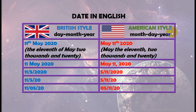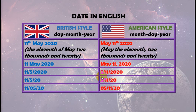Sedangkan untuk penanggalan American style, urutan tanggal yang disebutkan adalah bulan dulu, baru hari, kemudian tahun. Angka yang digunakan bisa menggunakan bilangan urut atau bilangan pokok. Contoh: 'May 11th, 2020', dibaca 'May eleventh, two thousand and twenty', artinya bulan May, hari ke-11, tahun 2020. Bisa juga ditulis dengan bilangan pokok: 'May 11, 2020'. Atau bisa juga ditulis dengan menggunakan angka seluruhnya seperti 5/11/2020, artinya bulan ke-5, hari ke-11, tahun 2020.